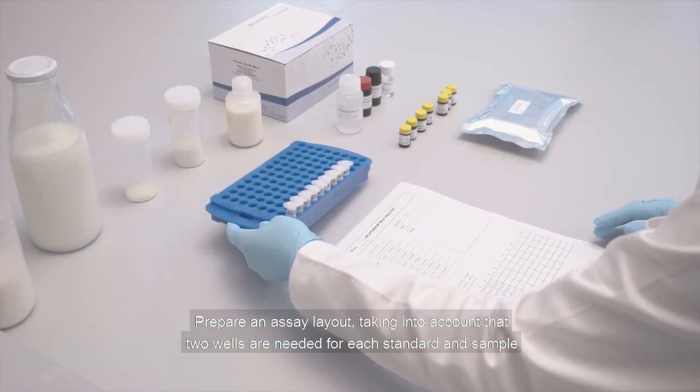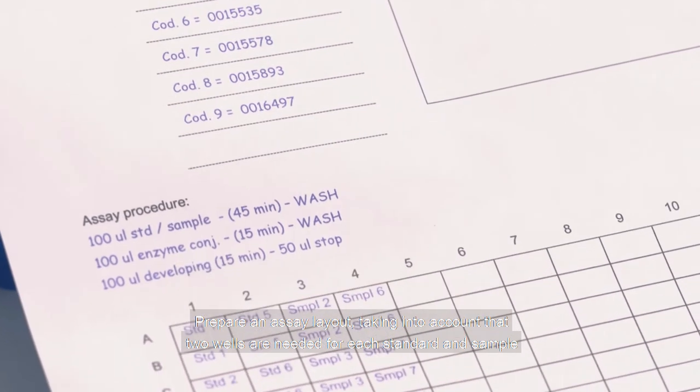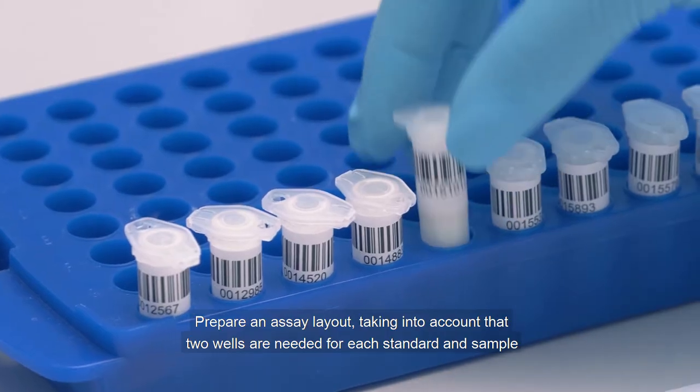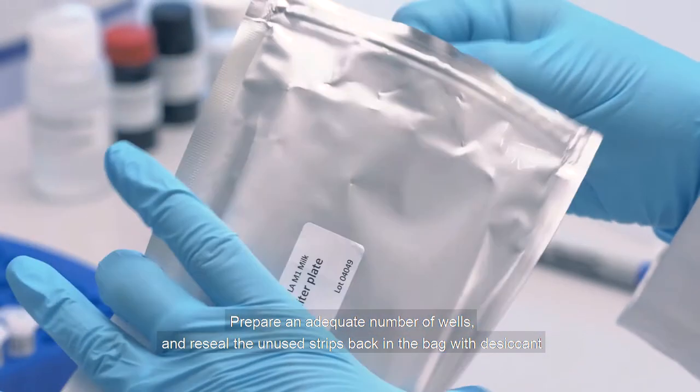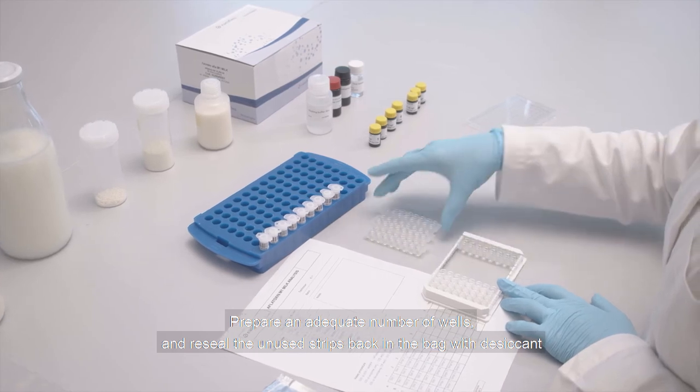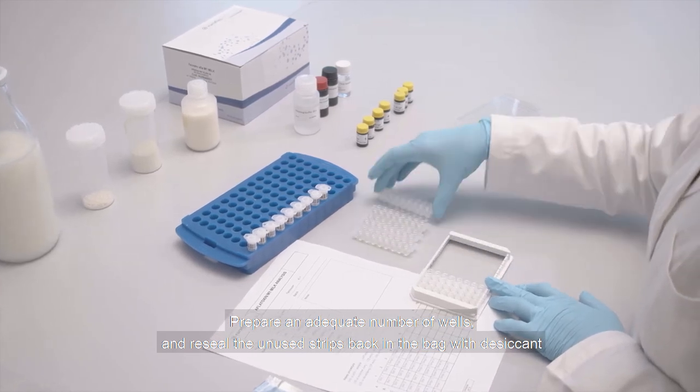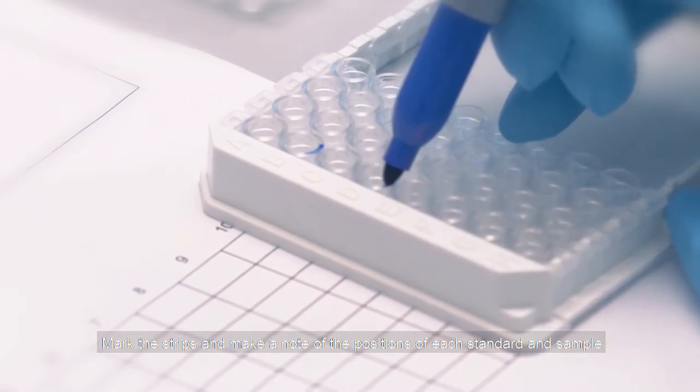Prepare an assay layout, taking into account that 2 wells are needed for each standard and sample. Prepare an adequate number of wells and reseal the unused strips back in the bag with desiccant. Mark the strips and make a note of the positions of each standard and sample.